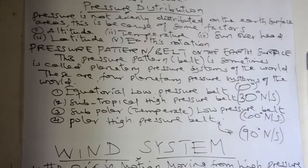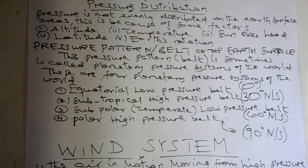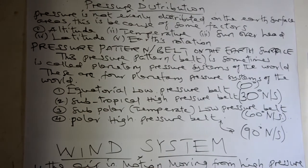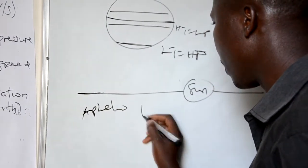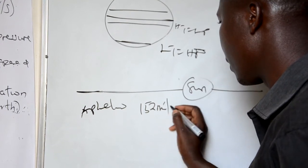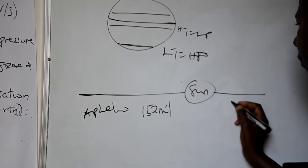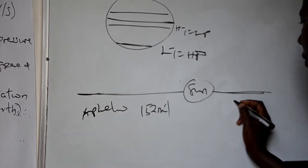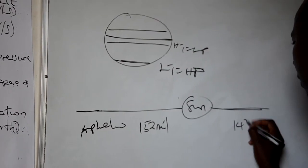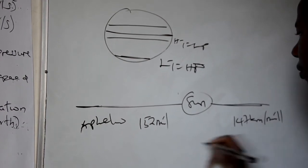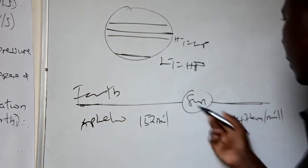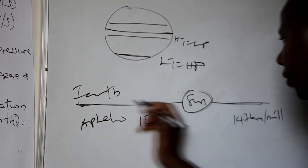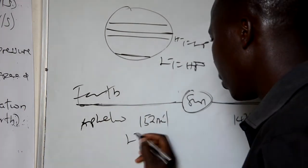Another factor is earth rotation. The earth rotates whereby it can either be far away or nearby the sun. For instance, when the earth is very far from the sun — called aphelion, at about 152 million kilometers — compared to when the earth is very close to the sun at about 147 million kilometers, called perihelion. Therefore, if the earth is nearby the sun, it is associated with high temperature and low pressure. But if the earth is very far away from the sun, it is associated with low temperature and high pressure.